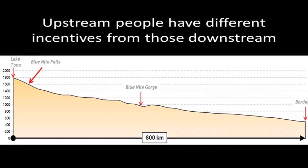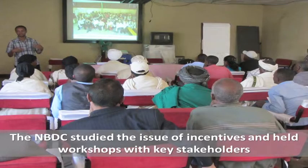A farmer's investment to manage water more effectively on her field will have costs and benefits. If she pays high costs but receives only a few benefits, she will not be interested. However, downstream people may benefit more from her investment through reduced siltation. Therefore, if downstream people offer additional incentives to the upstream farmer, she may be more willing to invest. The Nile Basin Development Challenge started this issue of incentives.